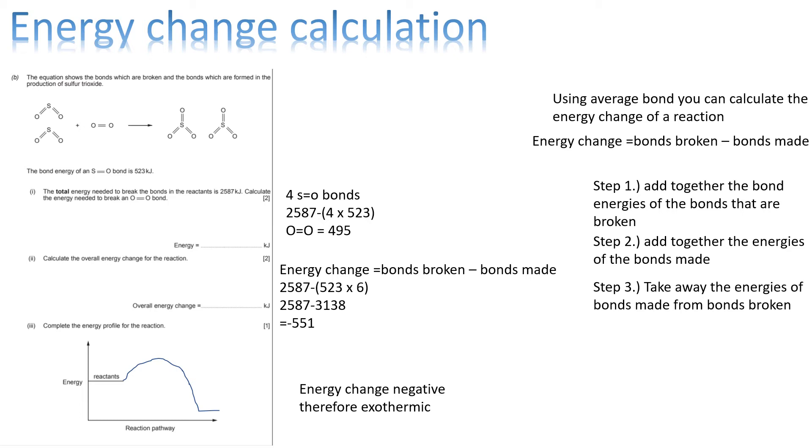So, we know the value of a sulphur-to-oxygen bond, and we see 6 of them. So, 6 times 523 is 3,138. That is the energy of the bonds made.